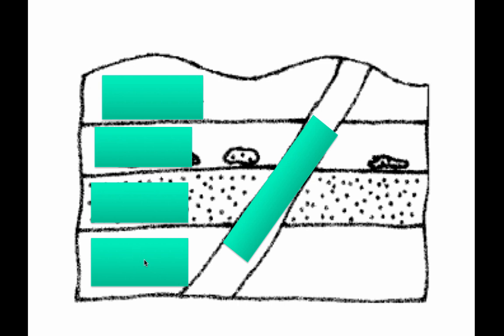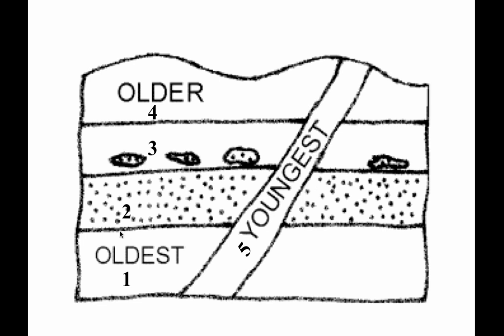The oldest one is this one right here, then this one is the next oldest, and then this, and then the youngest is this one. How do we know this? We can use the law of cross-cutting to say this is the youngest. Then we can use superposition to say this one is younger than three because four was laid on top of three. When we compare three and two, we use the law of inclusions — three has to be younger than two because it has pieces of two inside of it. And then two, using superposition again, has to be younger than one at the bottom.